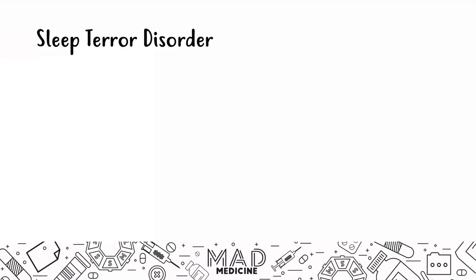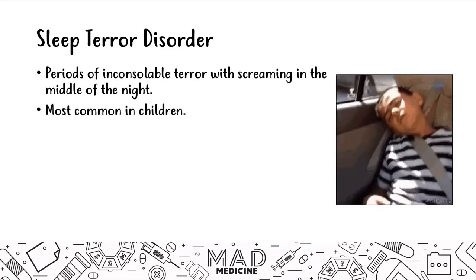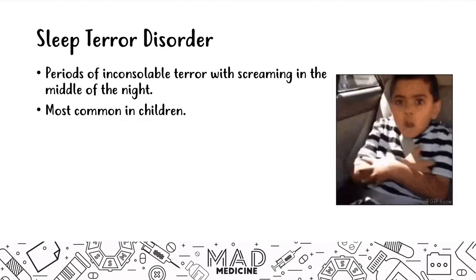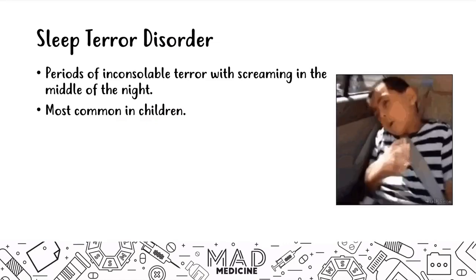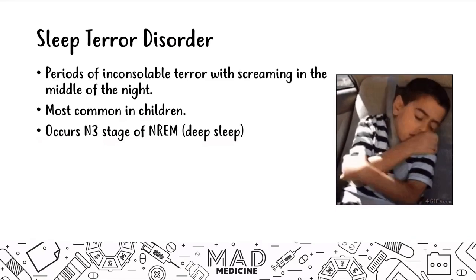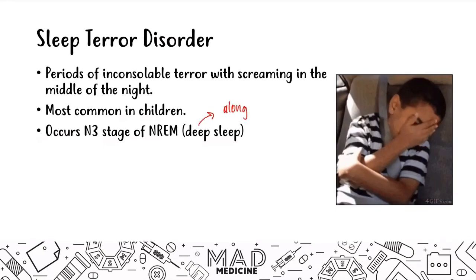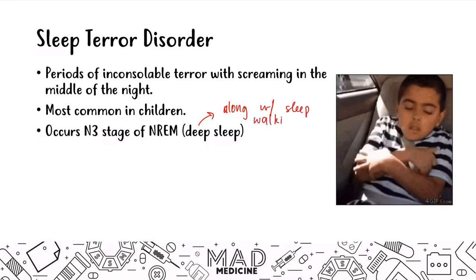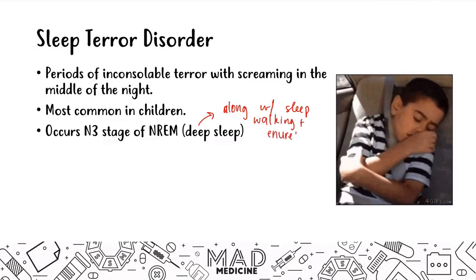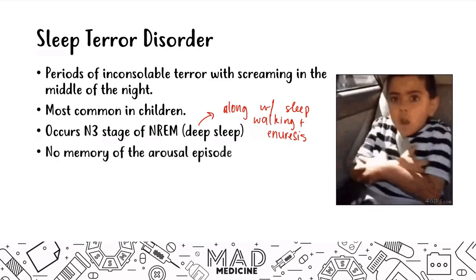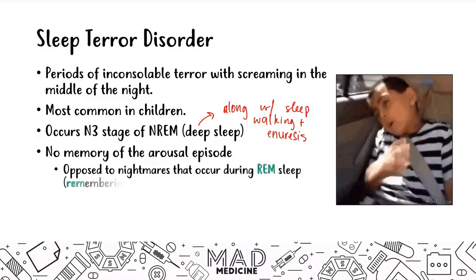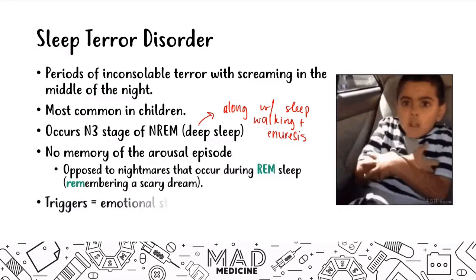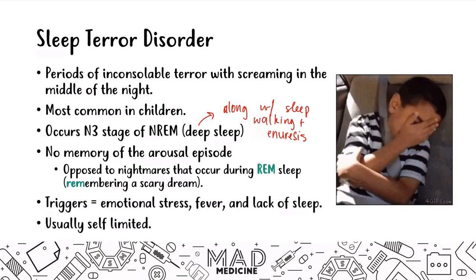After narcolepsy, we have sleep terror disorder. In this disorder patients have periods of inconsolable terror with screaming that happens all of a sudden. This is most common in children and occurs in N3 stage of non-REM, the deep sleep, along with sleepwalking and enuresis. Patients have no memory of the arousal episode, as opposed to nightmares which occur in REM sleep. Triggers can be emotional distress, fevers, lack of sleep. This is usually self-limiting, it goes away over time.